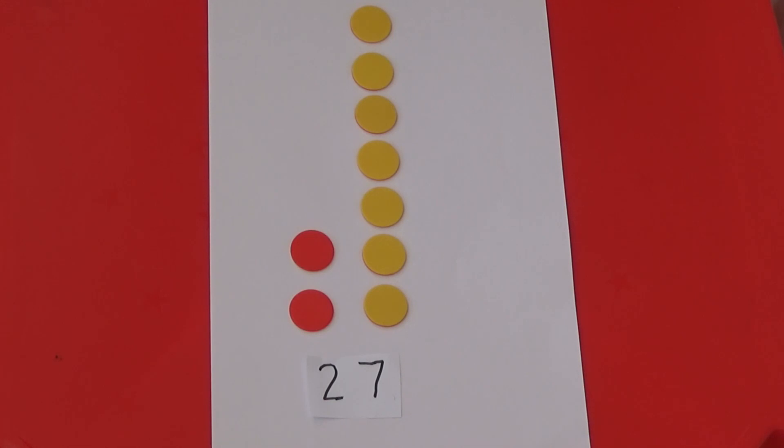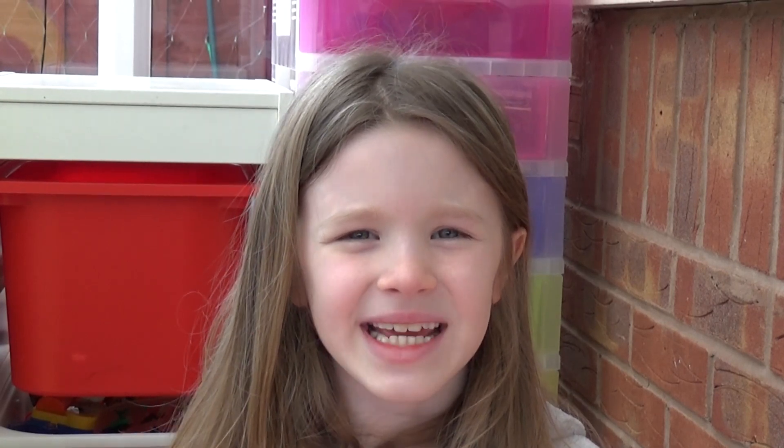And here I have made the number twenty-seven by using two red counters to represent twenty and seven yellow counters to represent seven. The next activity is a simple estimation activity.